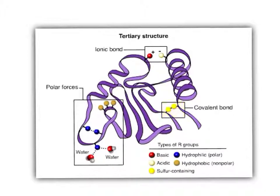There's also the disulfide bridge. The amino acid cysteine has sulfhydryl groups which can react with each other to form a disulfide bridge. Breaking and reforming disulfide bridges is actually how hairdressers give people perms — they reduce the disulfide bridges, set your hair in the shape you want, then oxidize them again to form disulfide bridges in different places.